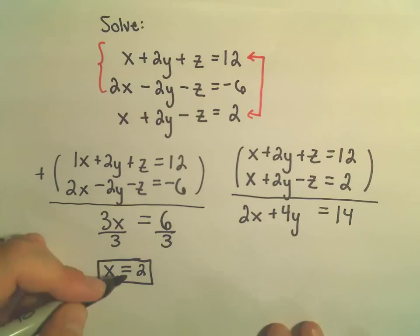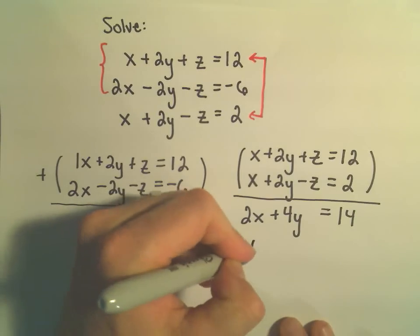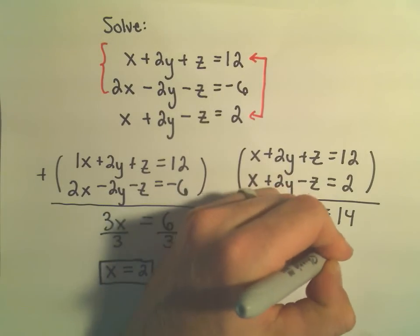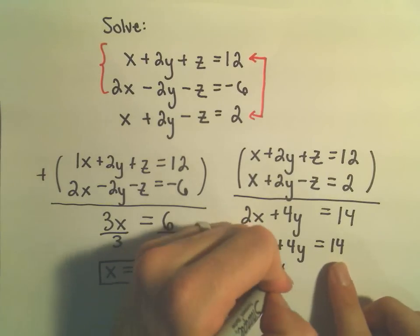And at this point, I'm just going to simply plug in my x value of 2. So, we'll have 2 times 2 plus 4y equals 14. Well, 2 times 2 is 4. If we subtract that from both sides, if we subtract 4 from both sides,